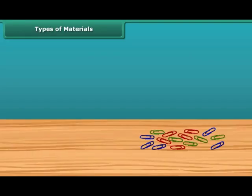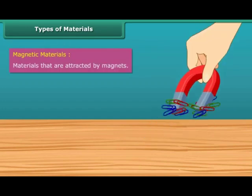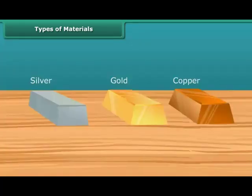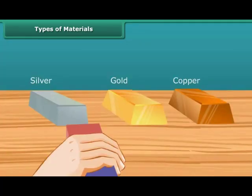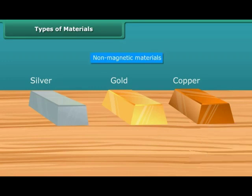Now let us look at the types of materials. Materials that are attracted by magnets are called magnetic materials — for example, screws, nuts, and bolts. Materials that are not attracted by magnets are called non-magnetic materials.